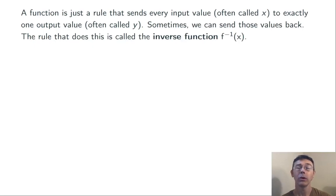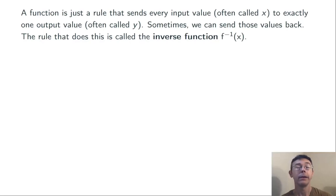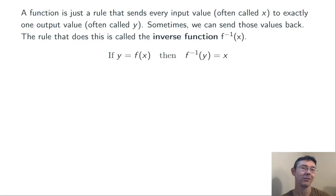Sometimes we're able to send those values back, and in that situation we call the rule that sends the values back the inverse function, f inverse of x. It's denoted f with a superscript negative one. That's not an exponent, so this is different than one over f of x — it's just notation that means the inverse function.